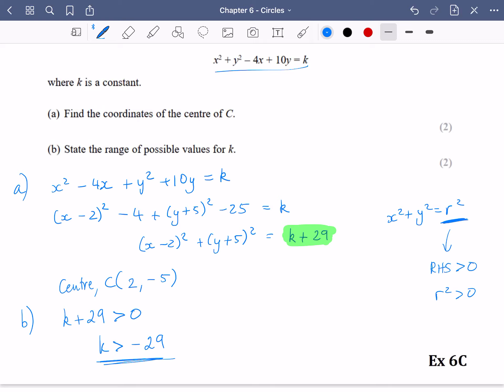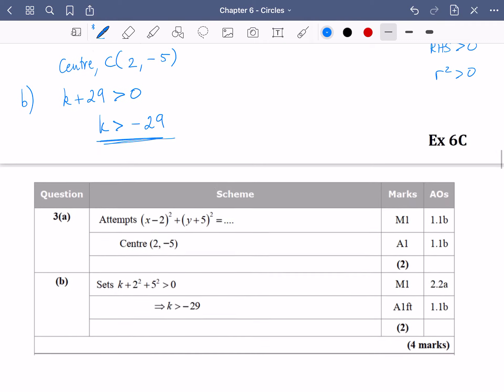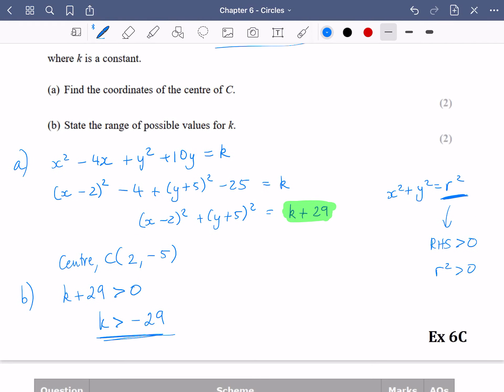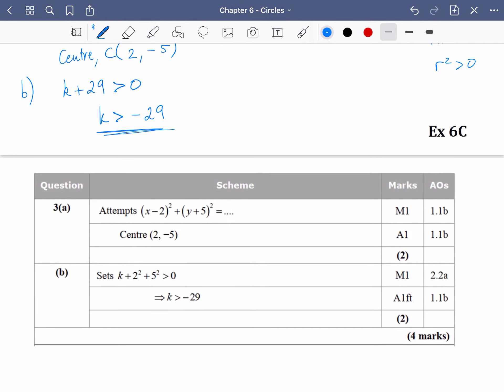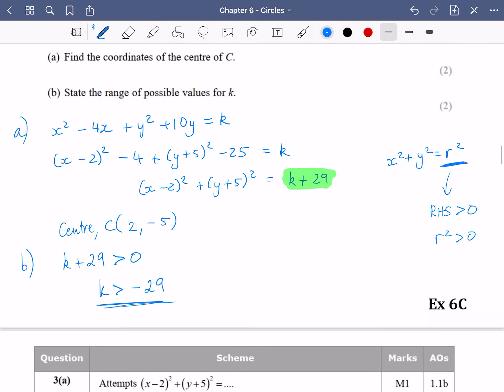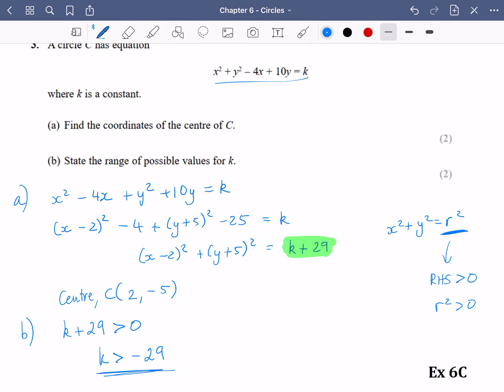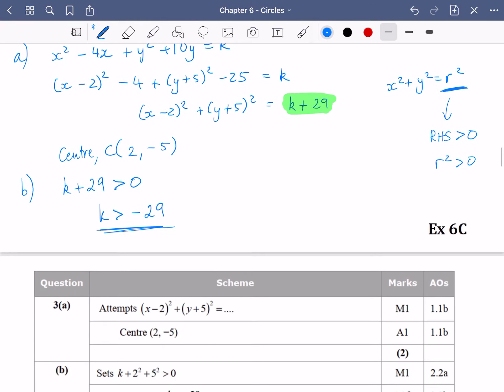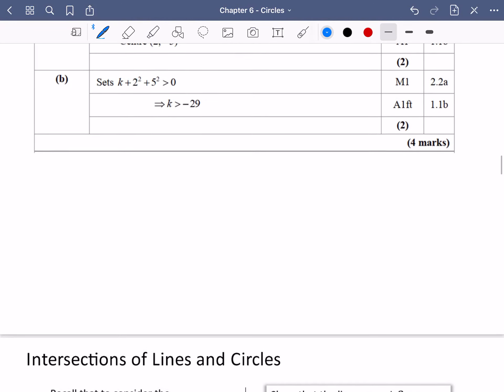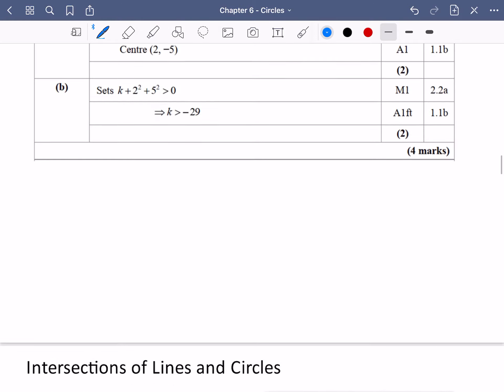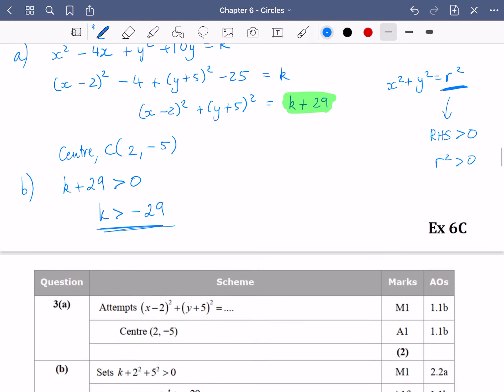So let's just confirm that we got these right from the mark scheme. So we got the center is (2, -5), which we have, and that k is greater than -29. Okay, so that is enough information for you to have a good go at exercise 6C. And we'll be moving on to some intersections and some things in the next part. Good luck with that. And I'll speak to you soon.